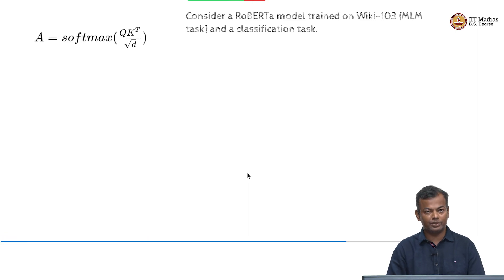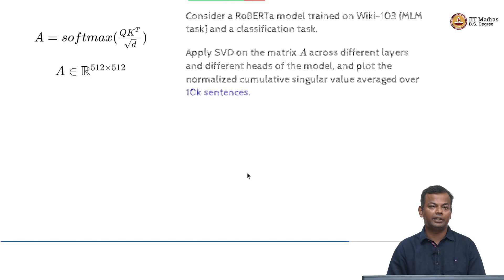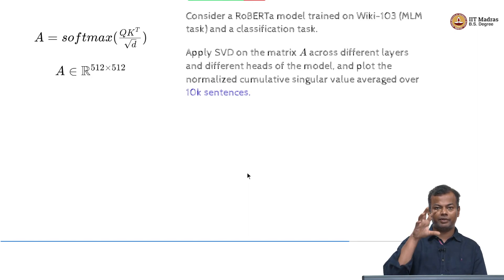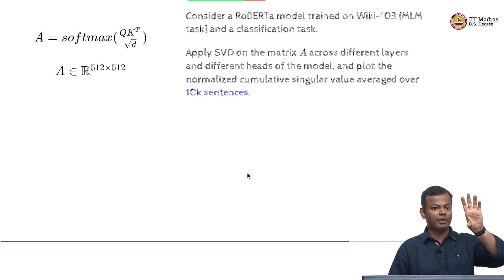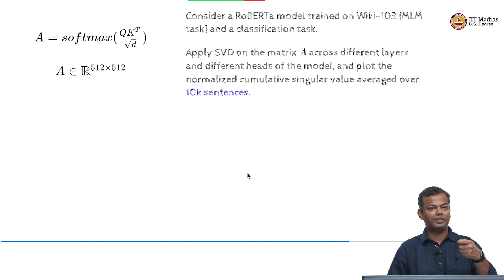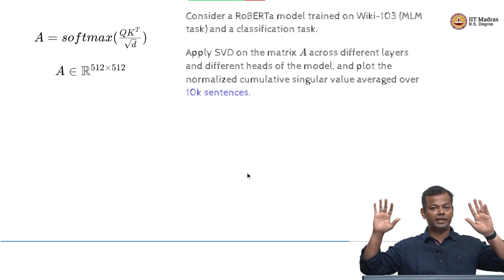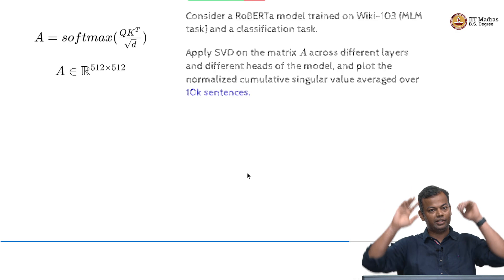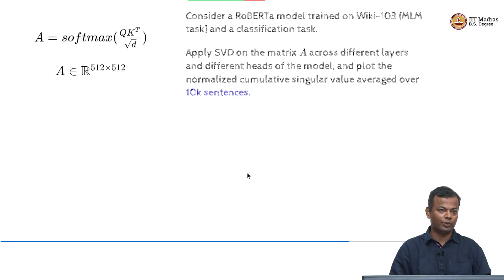Here is an experiment that was done. There is the RoBERTa model which was trained on some data with the MLM objective. They did an SVD on the attention matrix A across different layers and different heads. The attention matrix depends on the input — you have a sentence passing through, you compute the attention matrix, and you have many heads and many layers.